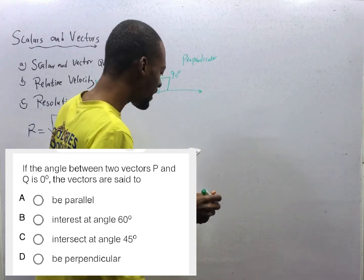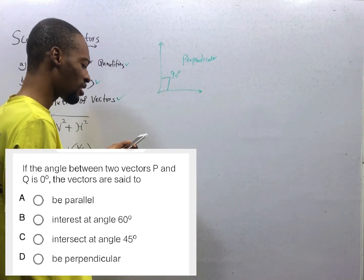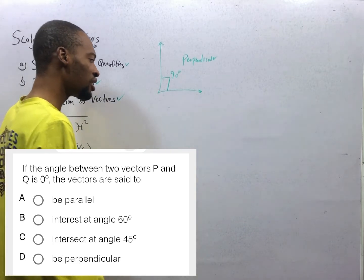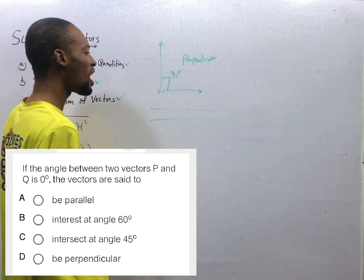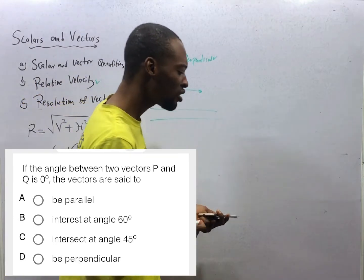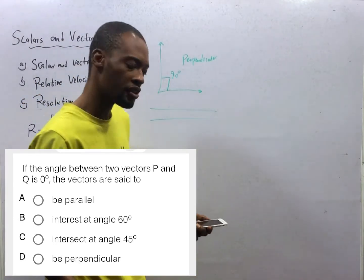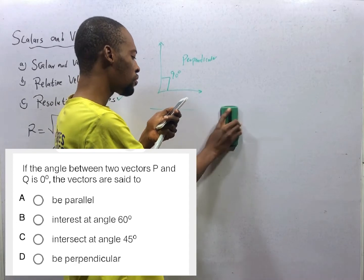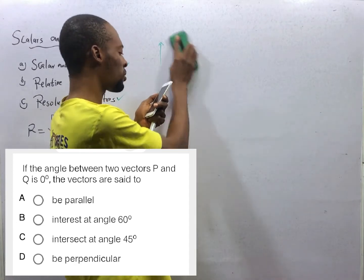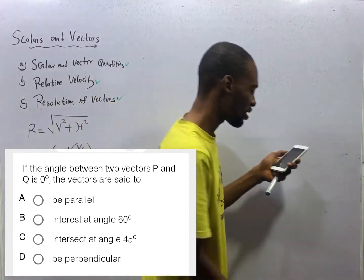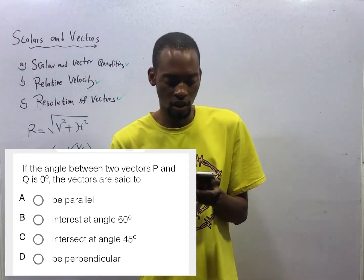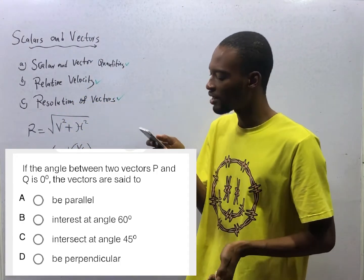A situation where the angle between two vectors is 0 degrees, it means one is like this, one is like this. When you have parallel lines, the angle between them is 0 degrees. So if the angle between two vectors P and Q is 0 degrees, the vectors are said to be parallel. Option A is the correct option.